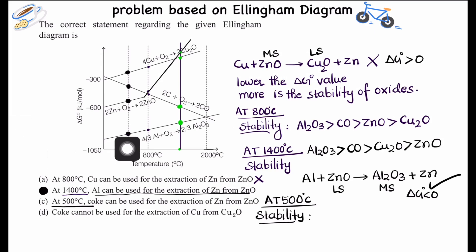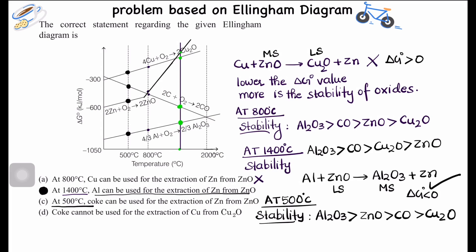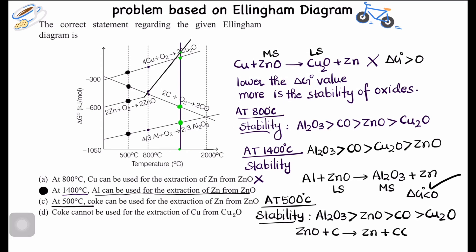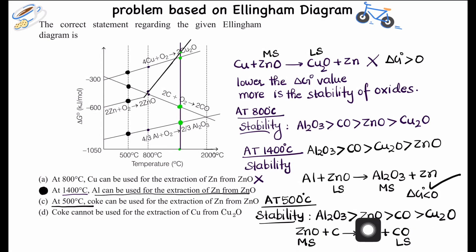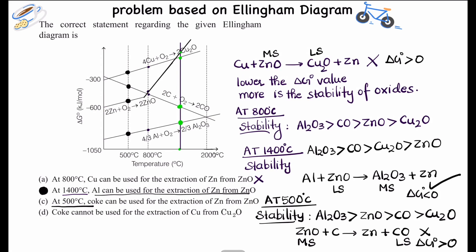At 500°C, the stability order is: Al₂O₃ is most stable (lying lowest with the most negative ΔG⁰), followed by ZnO, then CO, and then Cu₂O. The reaction ZnO + coke → Zn + CO is not feasible, because CO is less stable than ZnO here. Carbon cannot reduce ZnO since ZnO is the more stable oxide. ΔG⁰ for this reaction is greater than zero.